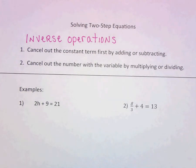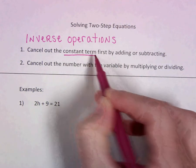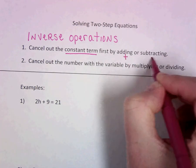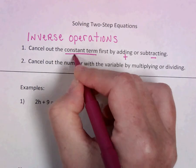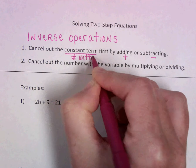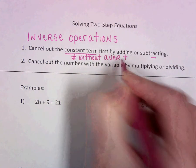And when we look at a simple two-step equation, we're always going to cancel out the constant term first by either adding or subtracting. Remember, the constant term is the number for the term without a variable. It is just a number.